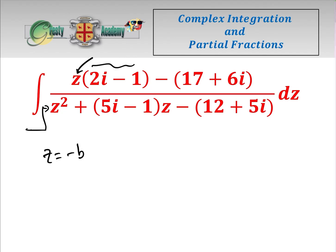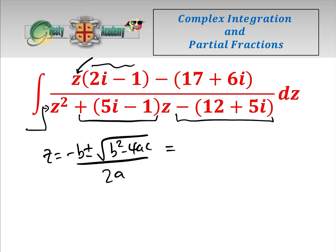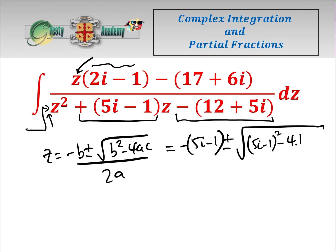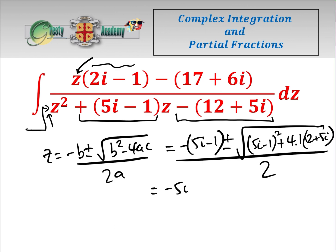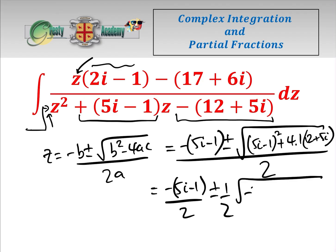The quadratic formula is Z equals minus B plus or minus the square root of B squared minus 4AC, all over 2A. That's the same whether it's complex or real. So that equals — here B and C are identified and A is 1 — so that equals minus 5I minus 1, plus or minus the square root of (5I minus 1) squared minus 4 times 1 times (minus 12 add 5I), all over 2. And that equals minus 5I minus 1 over 2, plus or minus a half the square root of minus 25 minus 10I add 1 add 48 add 20I.